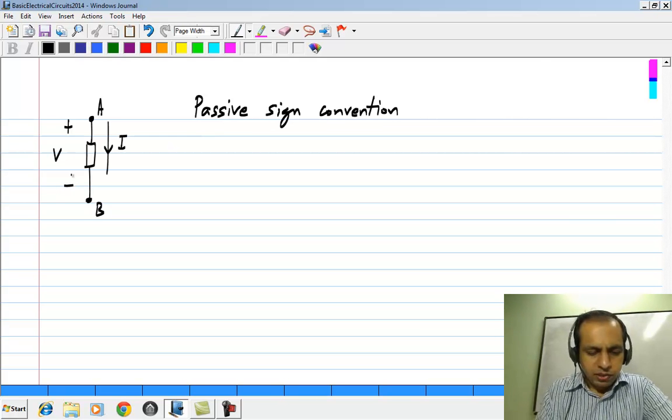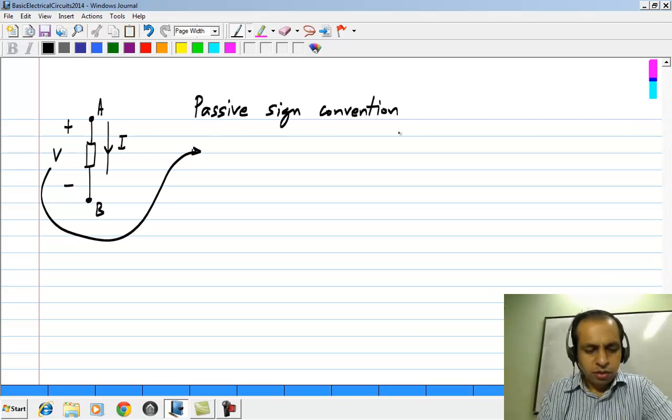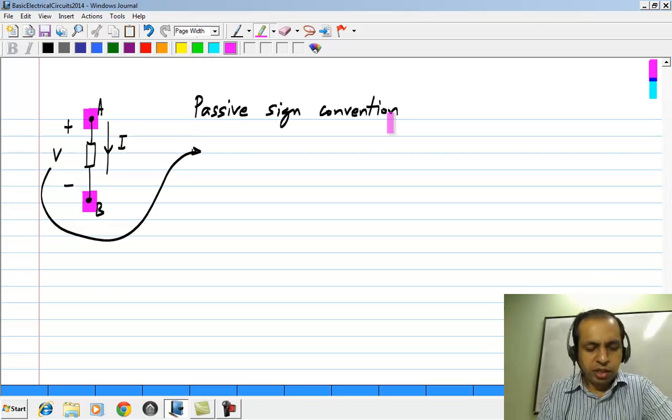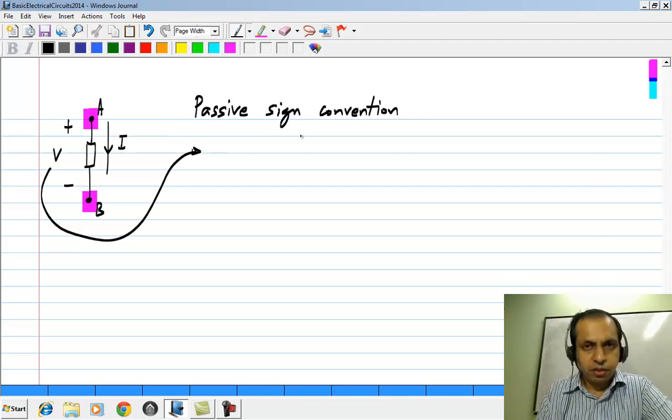What it means is that we define the voltage with some polarity, say we choose A to be positive and B to be negative. Of course, this does not mean that the voltage is positive this way, this is the way we define the voltage.